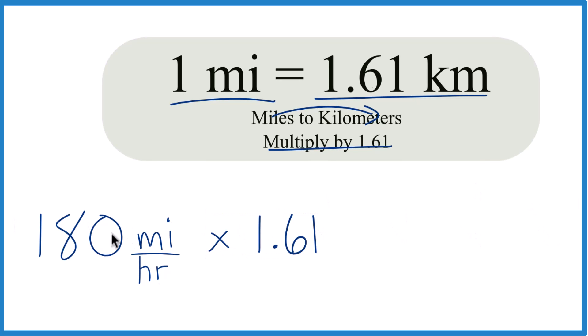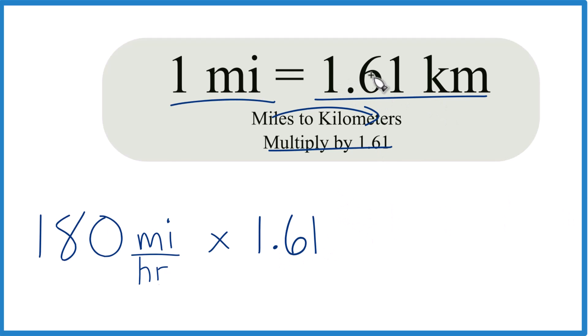And so 180 miles per hour times 1.61, that'll give us our kilometers per hour. But understand it's 1.61 kilometers here in one mile, per mile.